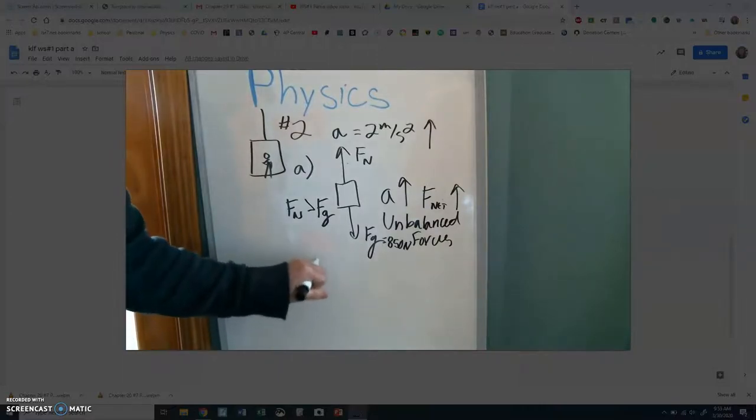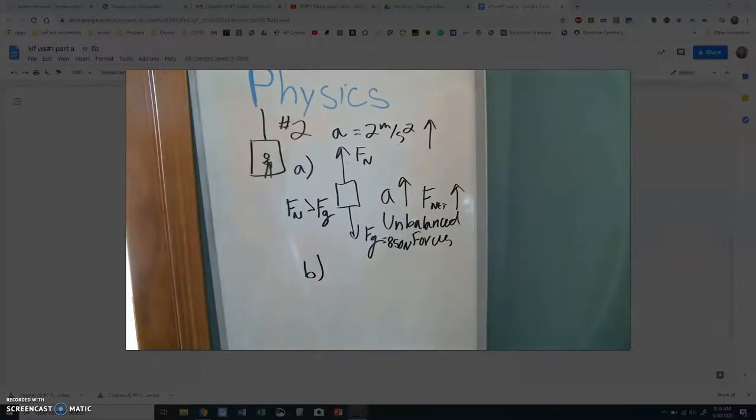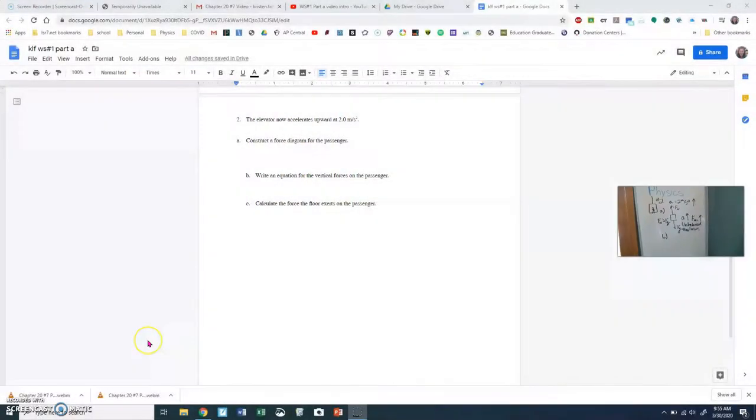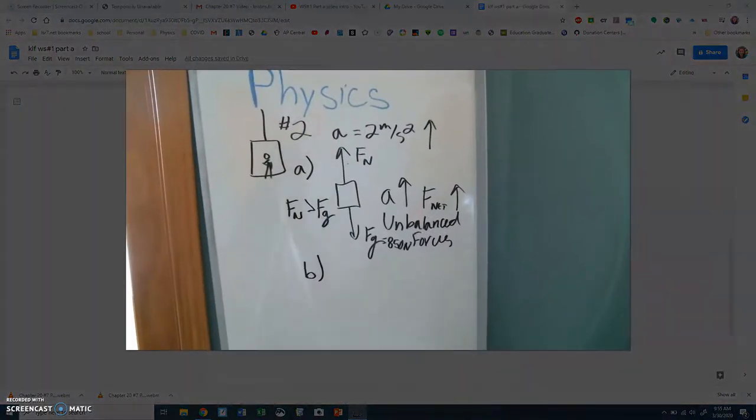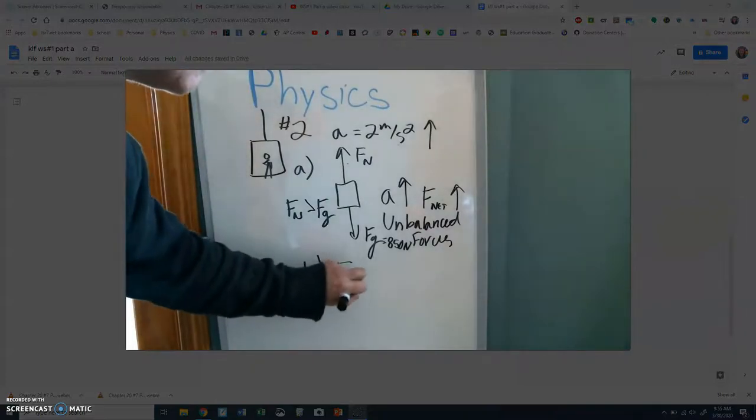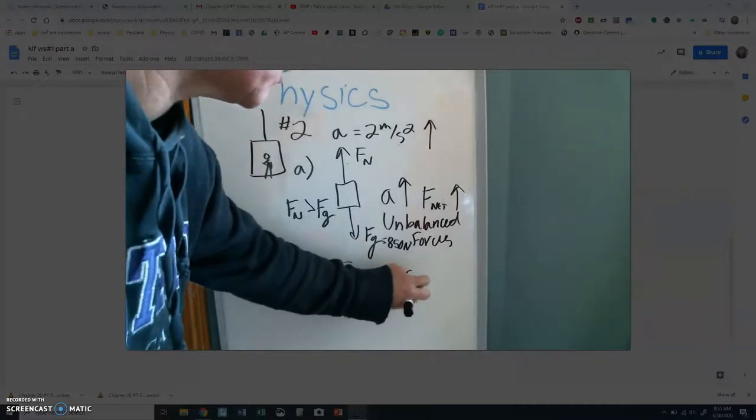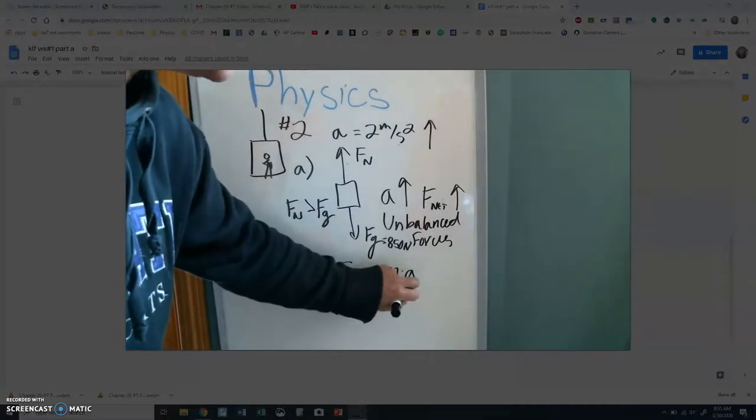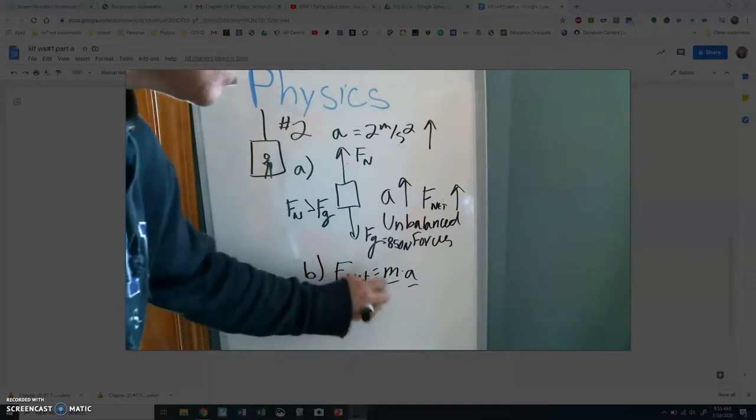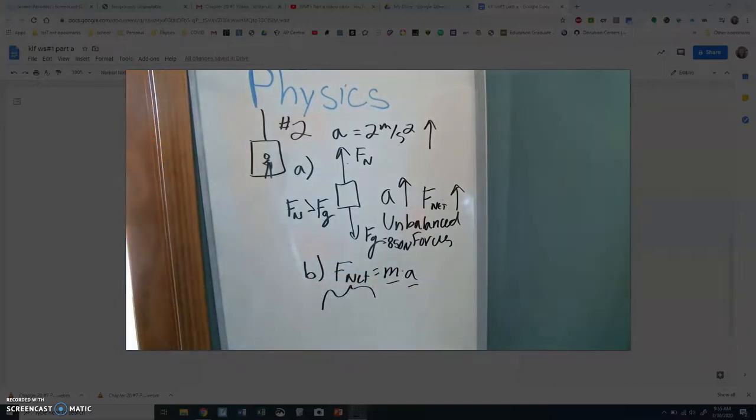Part B says write an equation for the vertical forces on the passenger. All right. Well, I'm just going to go to my force net equation. Force net equals mass times acceleration. We know this, and we know this. What are our forces? Well, we get that from the free body diagram.